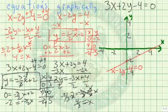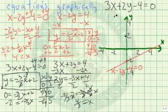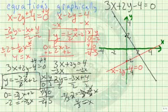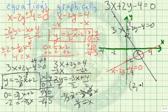Let's plot these points: (0, 2) here, (4/3, 0) somewhere around here, and (−2, 5) up there. Connecting these points gives a straight line representing 3x plus 2y minus 4 equals 0. Where do these two lines cross? It looks like the point where x is 2 and y is negative 1.